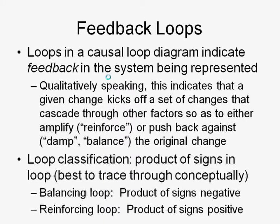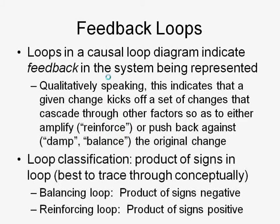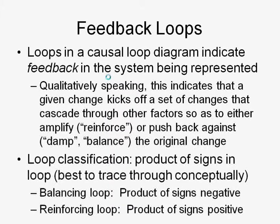Loops in these diagrams indicate feedback. A change in one of those variables will lead to a rippling through of changes across the loop that will either reinforce — amplify that original change — or push back against it, helping to balance it out. To determine which it is, we use the product-of-signs rule. Just as we can reason about the polarity of a pathway, we can reason about the polarity of a pathway that forms a loop.